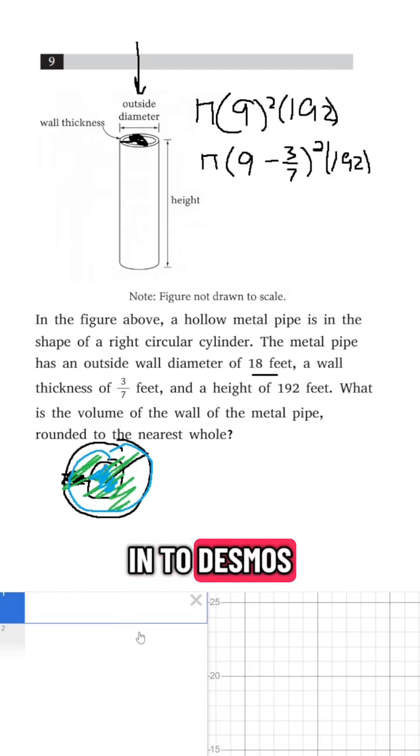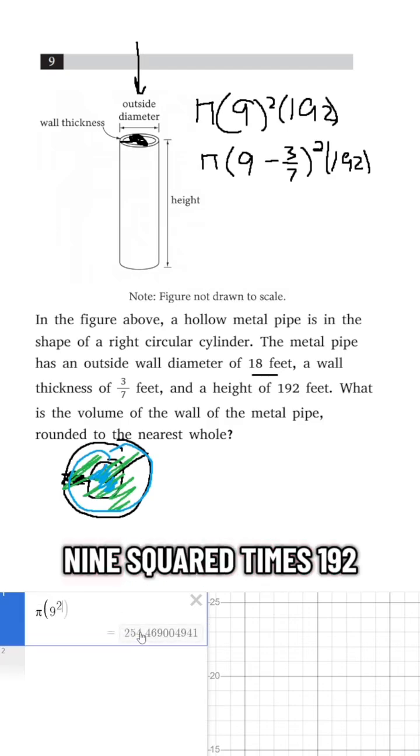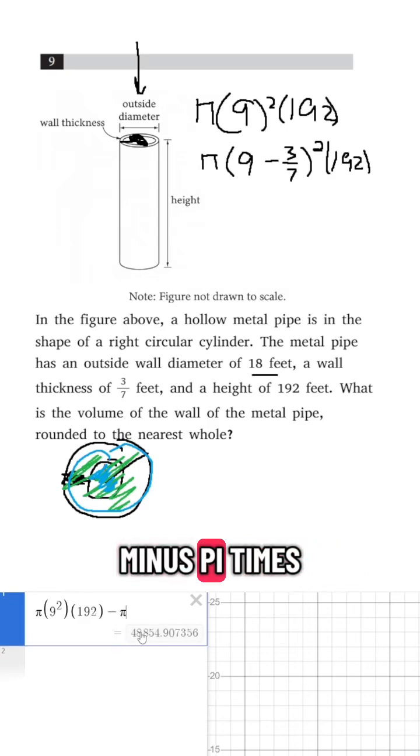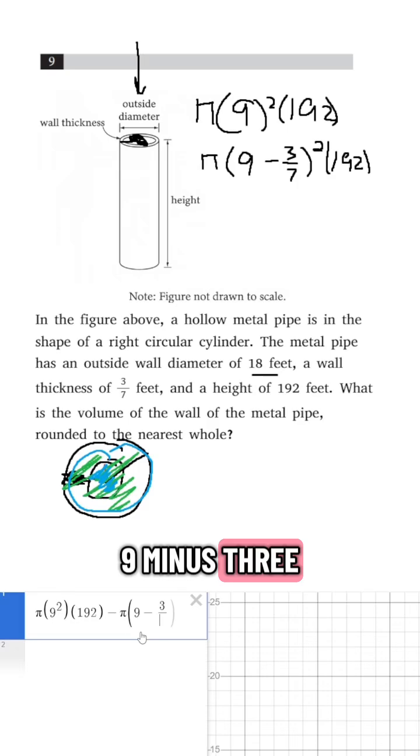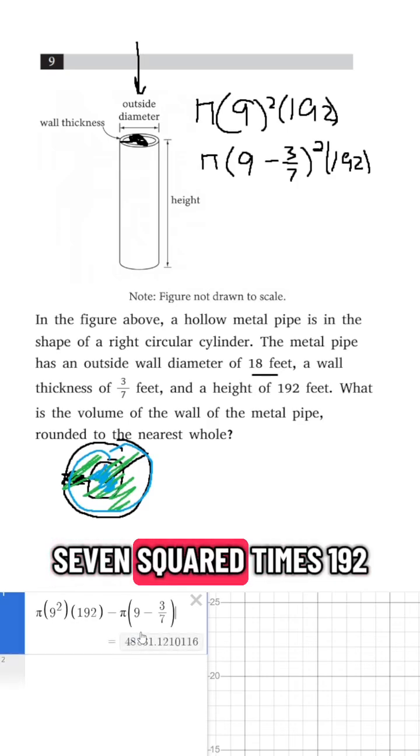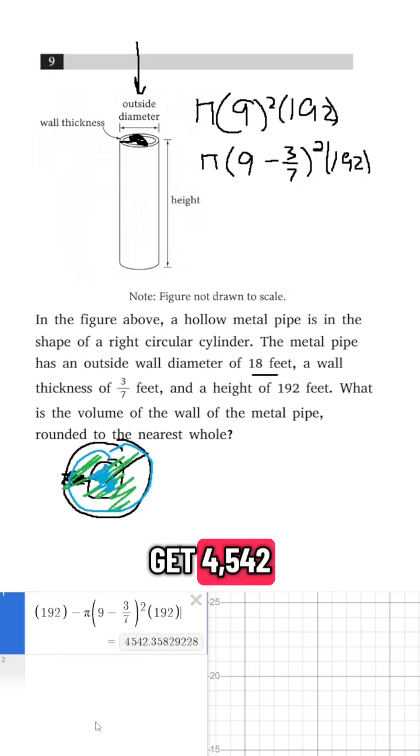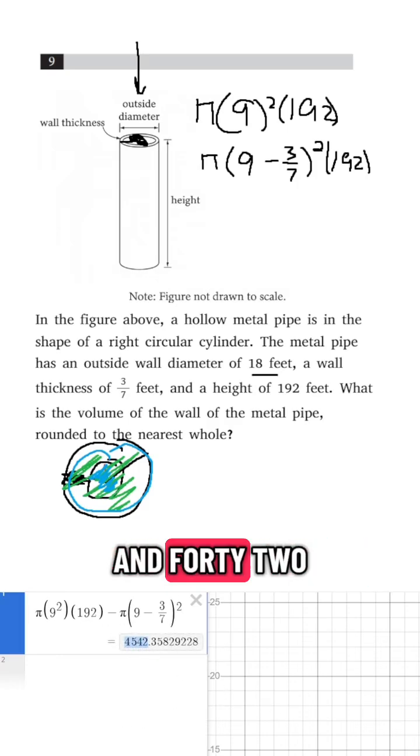So all I have to write into Desmos is π times 9 squared times 192 minus π times (9 minus 3/7) squared times 192, and I'm going to get 4,542, so my answer would be 4,542.